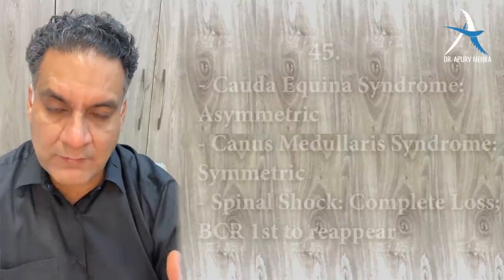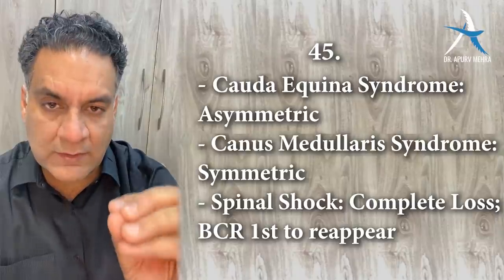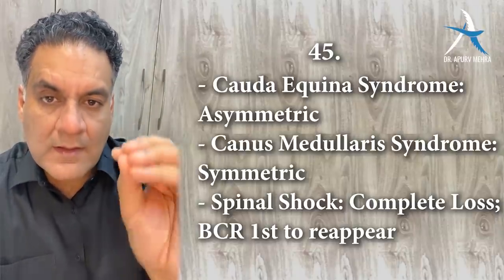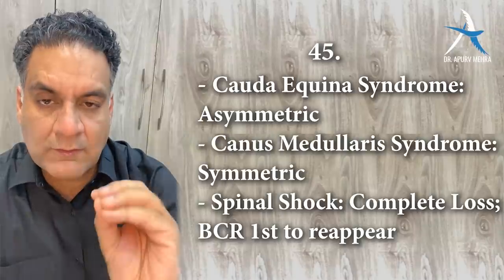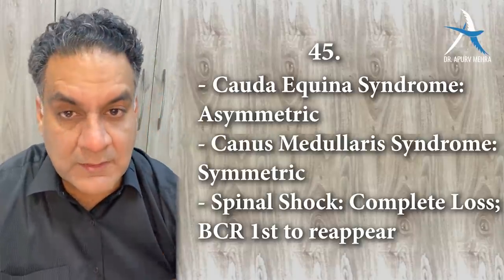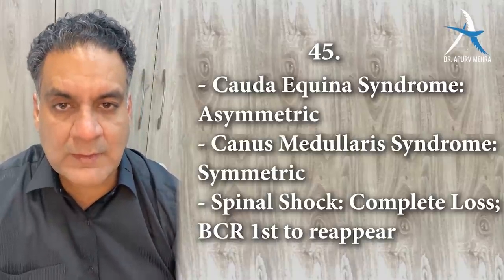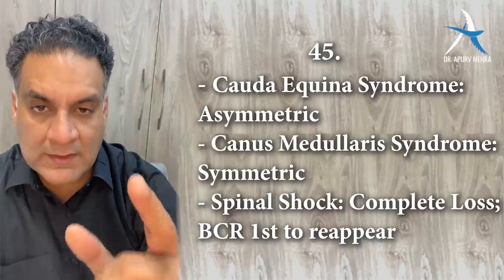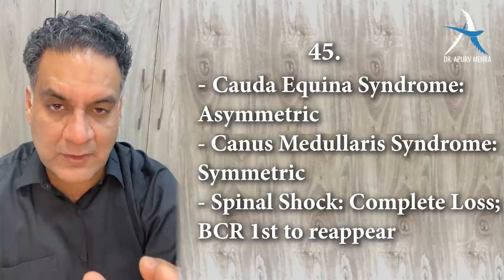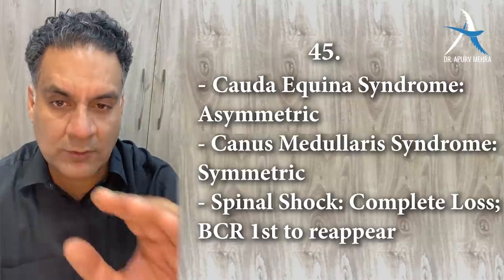Point number forty-five: cauda equina syndrome is damage to the terminal nerve roots — it is an asymmetrical motor or sensory loss with possible bowel and bladder involvement. Conus medullaris is a symmetrical loss in both lower limbs with bowel and bladder involvement. Remember: sudden injury to the spinal cord leads to spinal shock — areflexia, no motor, no sensation.